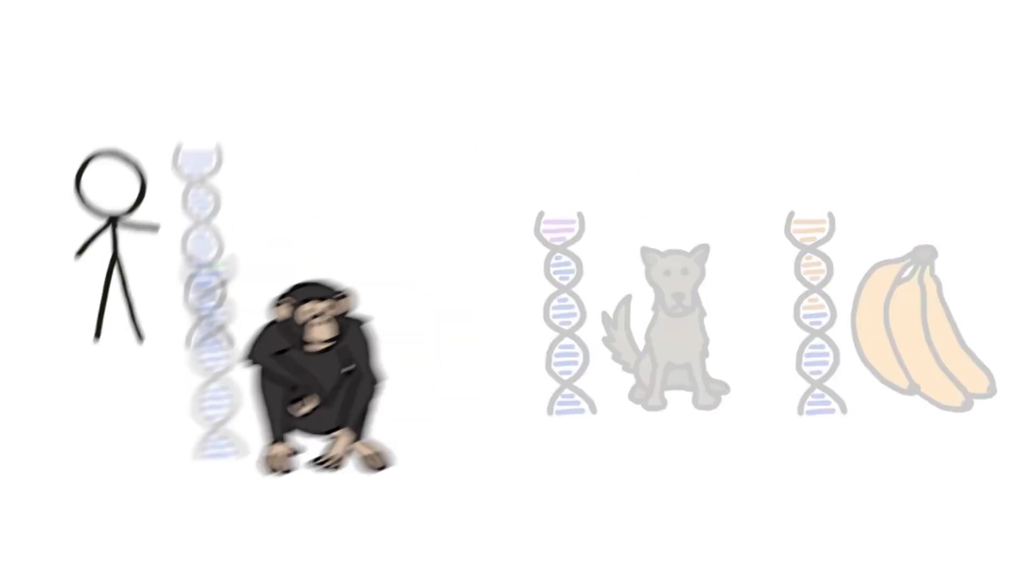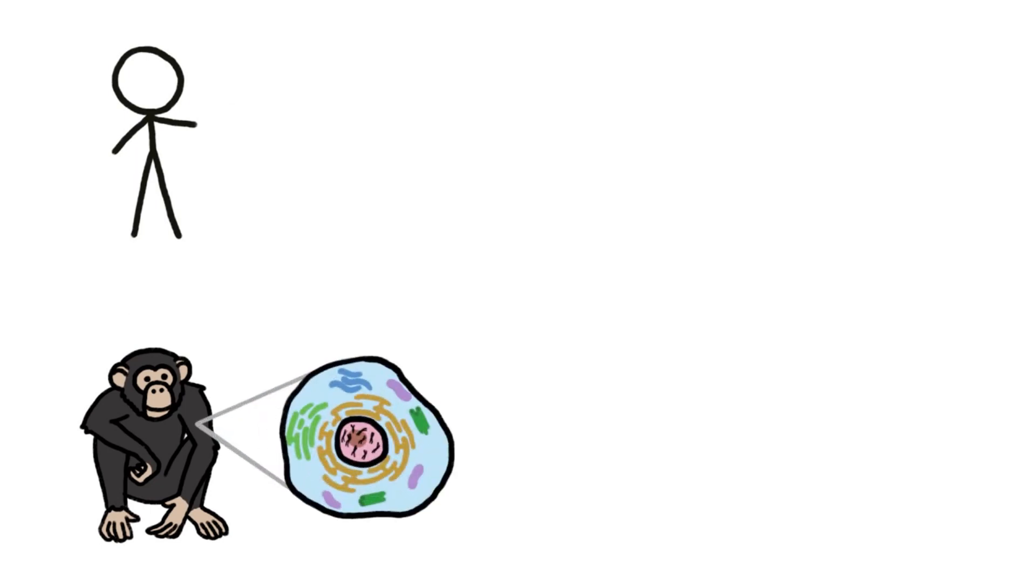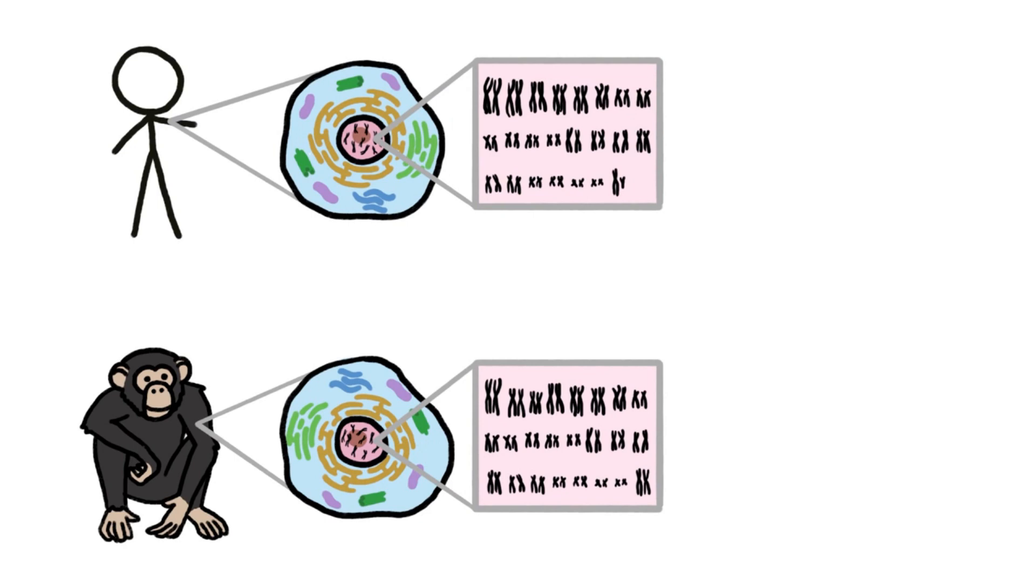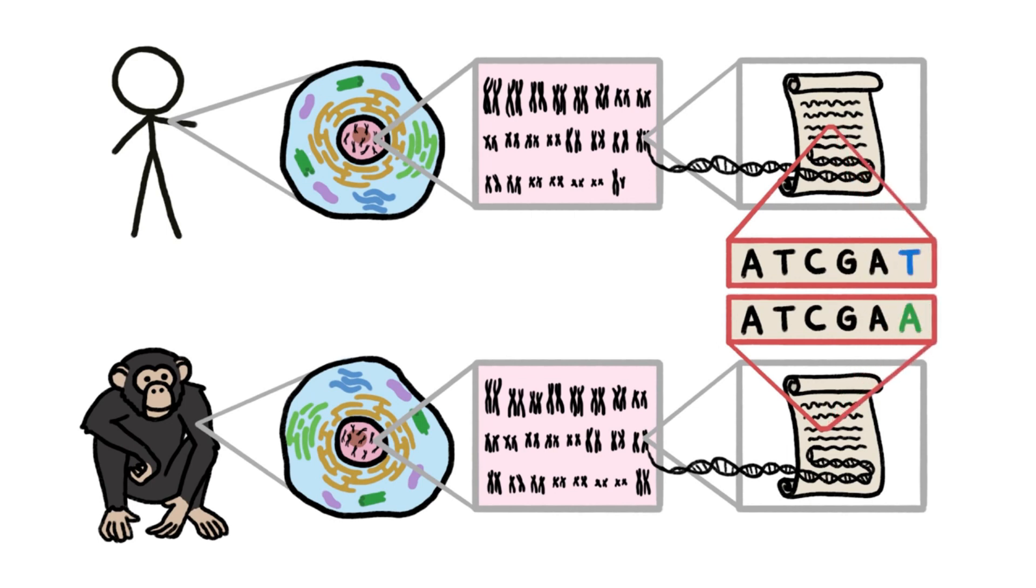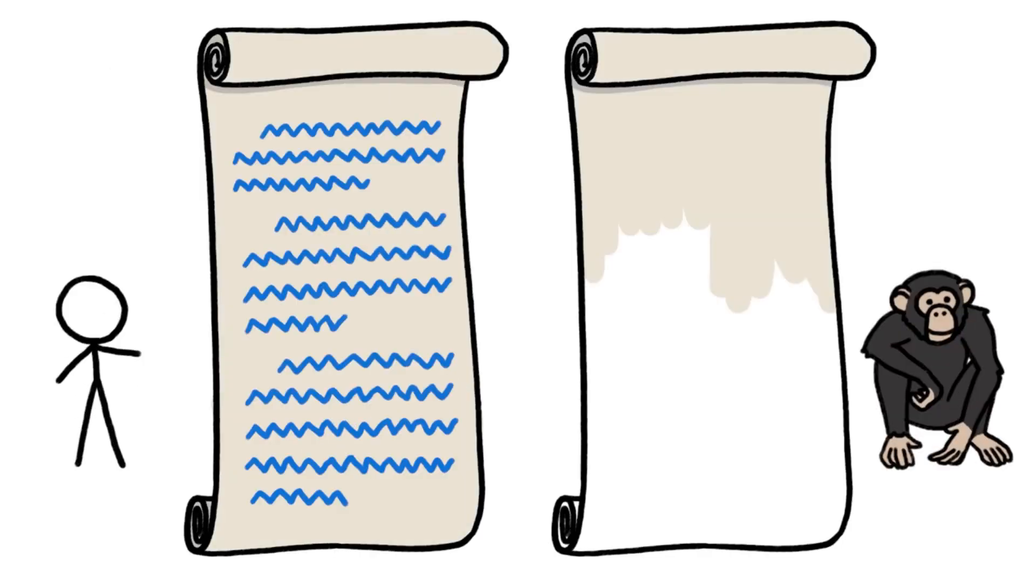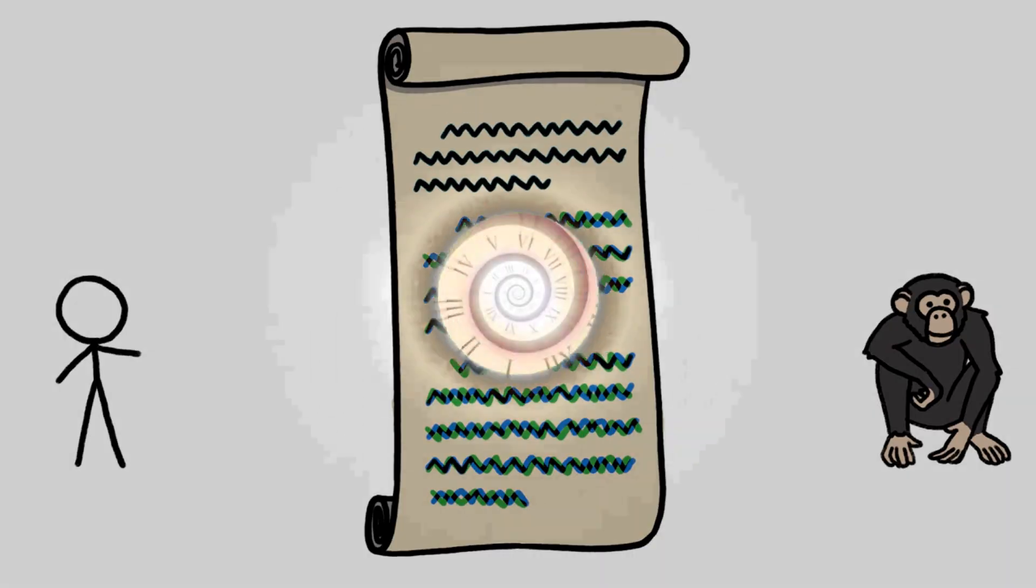Taken literally, those numbers make it sound like we could pluck one cell from a chimp and one from a human, pull out the tangled bundles of DNA known as chromosomes, unroll each one like a scroll, and read off two nearly identical strings of letters. But in reality, the human and chimp scrolls don't sync up so easily.